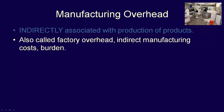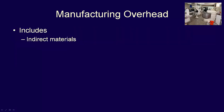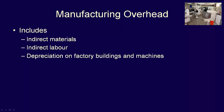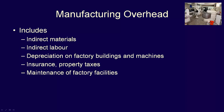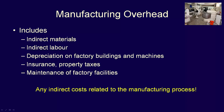What are some of the costs included in manufacturing overhead? Raw materials which cannot be easily associated with the finished product — indirect material. Labour which cannot be easily associated with the finished product — indirect labour. Depreciation on the factory building and machines. Insurance on the factory and property taxes incurred on the factory. The cost of maintenance for the factory facilities. If the cost is manufacturing related but cannot be classified as direct material or direct labour, it should be considered manufacturing overhead.